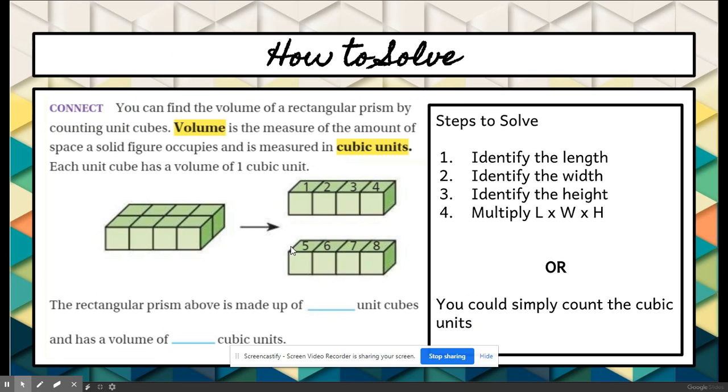So how to solve? First, we can find the volume of a rectangular prism by counting the unit cubes. Volume is the measure of the amount of space a solid figure occupies, and it is measured in cubic units. One strategy is to count the cubic units. If I wanted to find the volume, I would count 1, 2, 3, 4, 5, 6, 7, 8. I would say that this prism is made up of 8 cubic units and has a volume of 8 cubic units. However, sometimes figures will have a lot of cubes and it's really difficult to count those accurately. So I strongly recommend learning that formula, length times width times height.